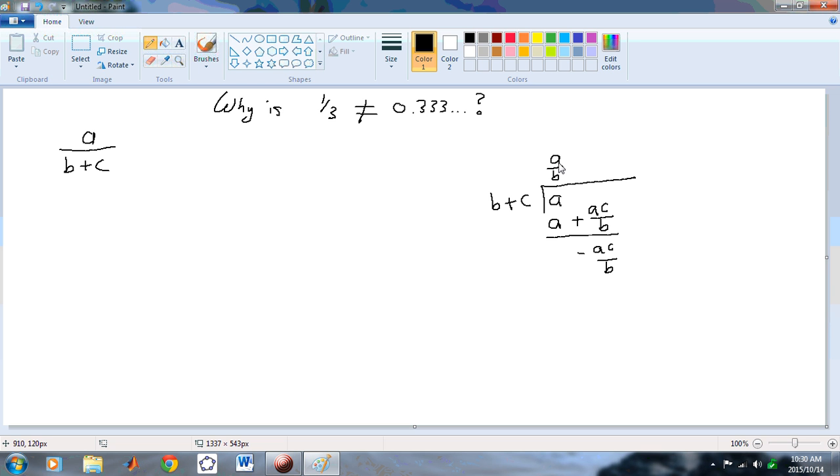And we could either stop here and say, well this here is equal to A over B minus AC over B, B plus C.